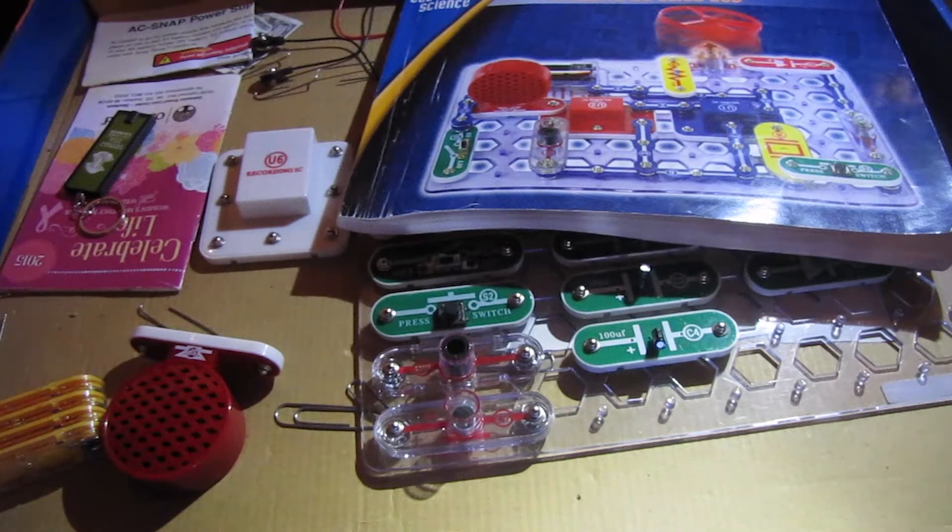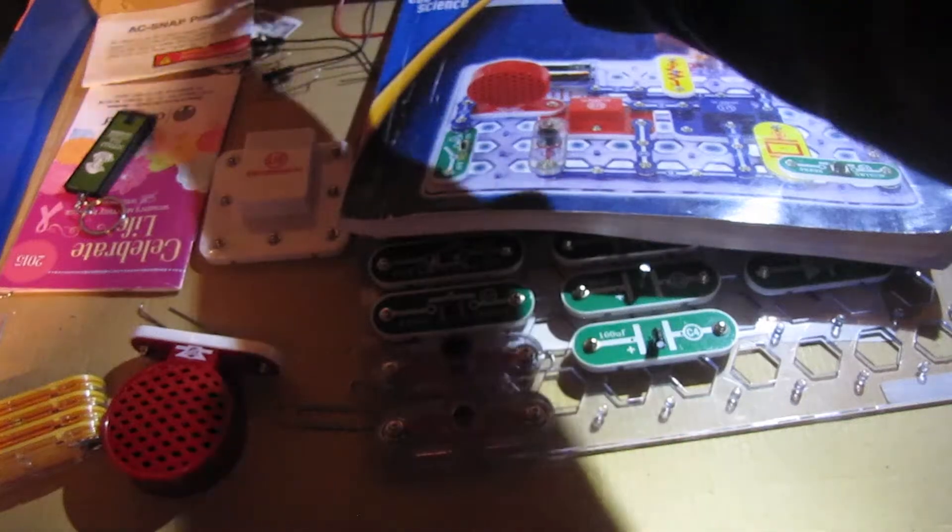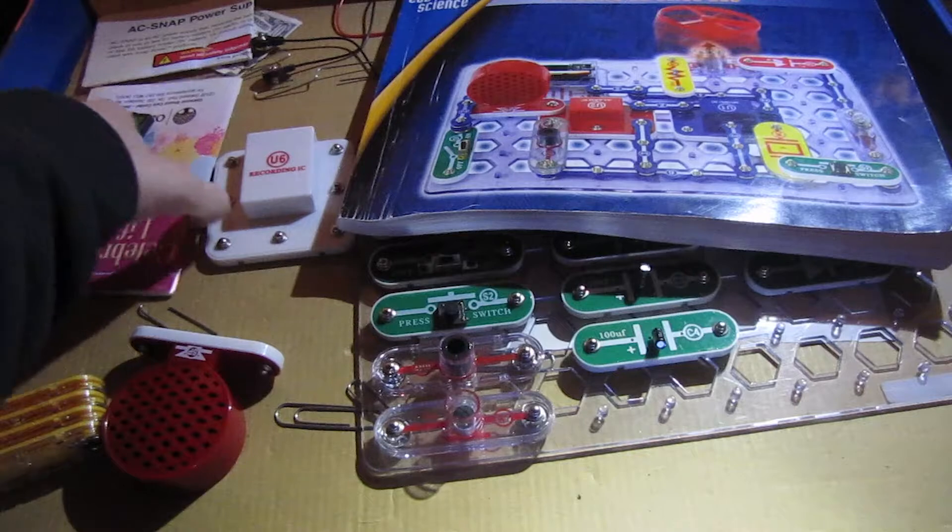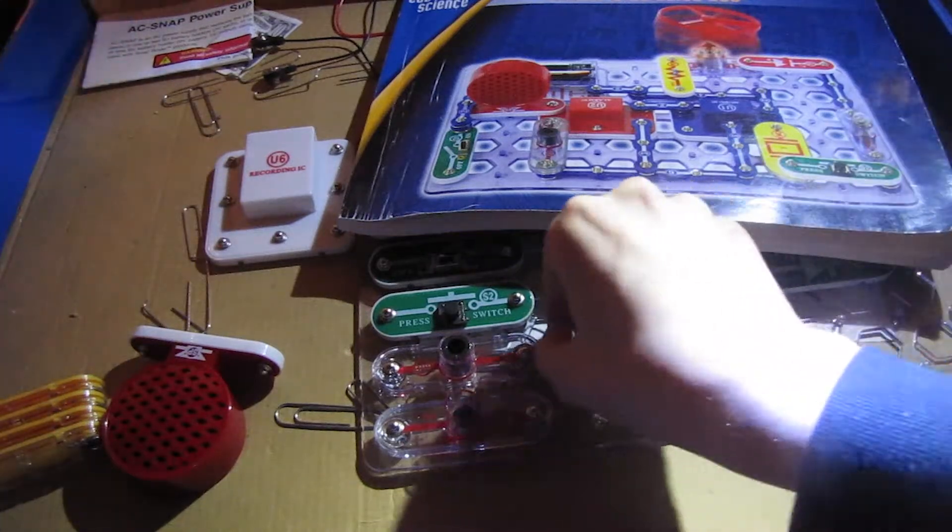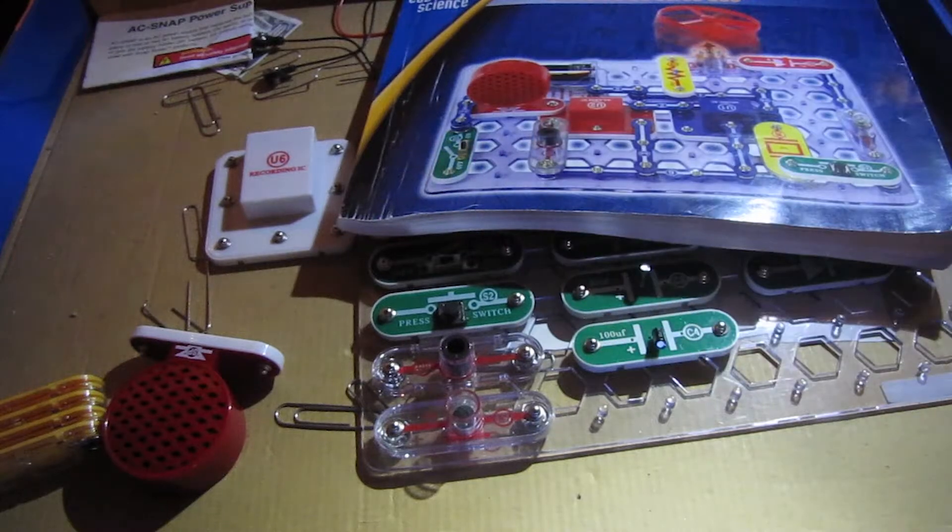And as you can see, the set is quite messy. So I'll just take out some of the stuff that we don't need, like these paper clips. I don't need this keychain light. I'll just put it in my drawer here.